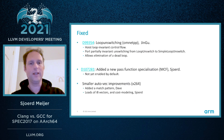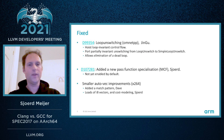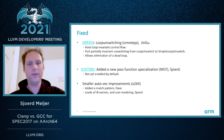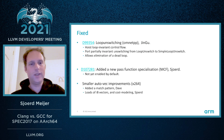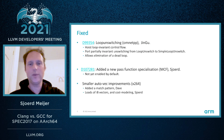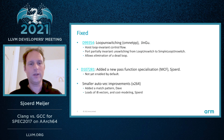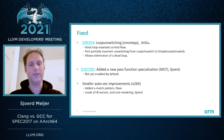My colleague Jingu started looking at loop unswitching, which is an optimization related to hoisting loop-invariant control flow. It was missing something, so he ported partial invariant unswitching from the existing pass loop-unswitch to simple-loop-unswitch. The goal was to finally allow elimination of a dead loop, so it has a big impact.